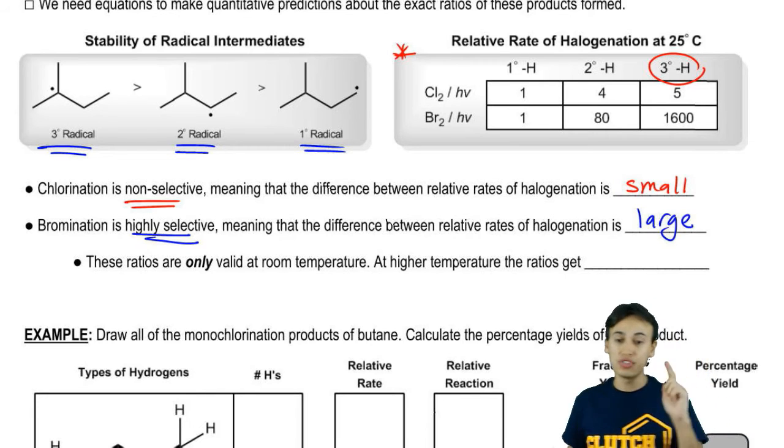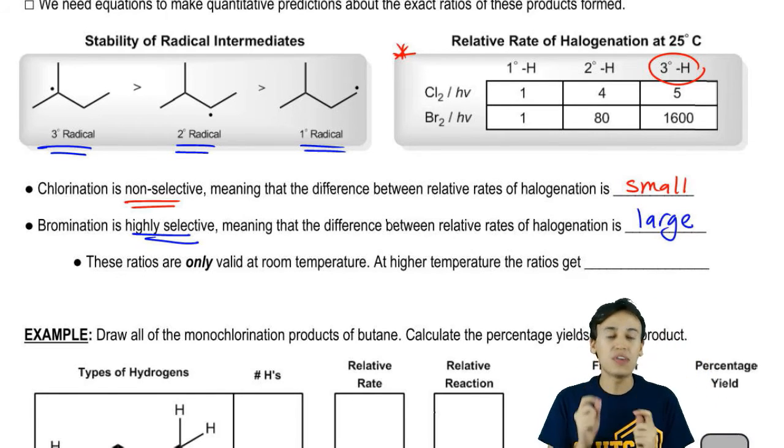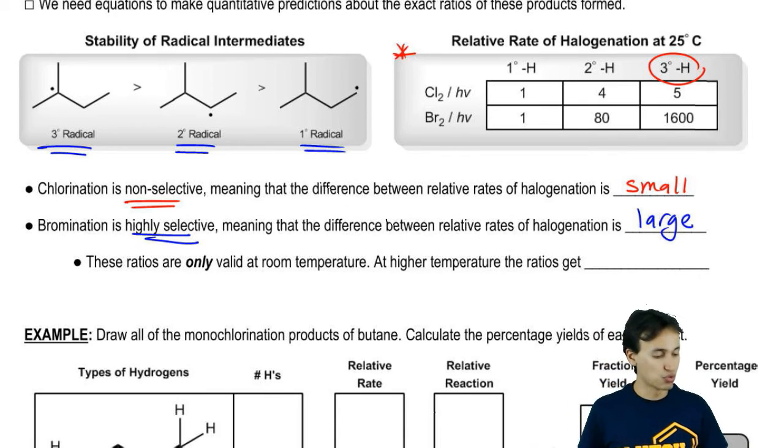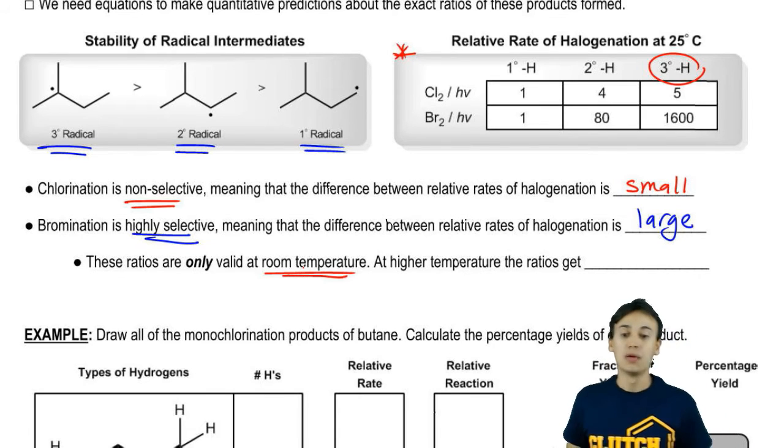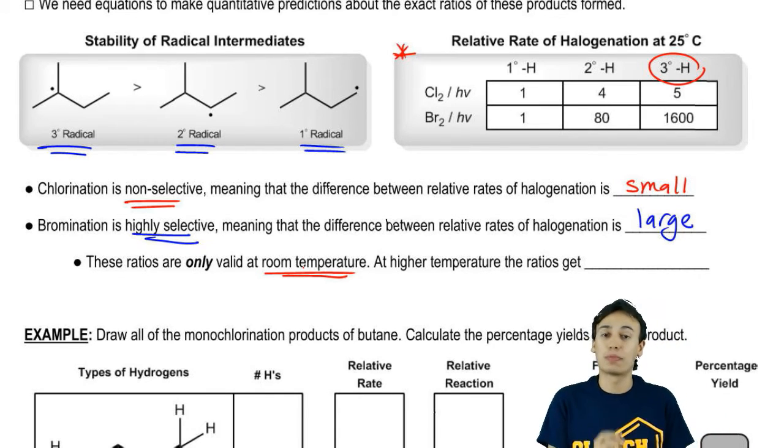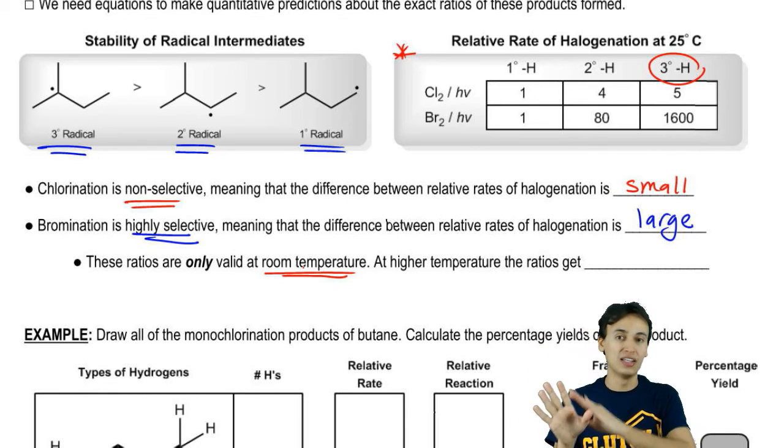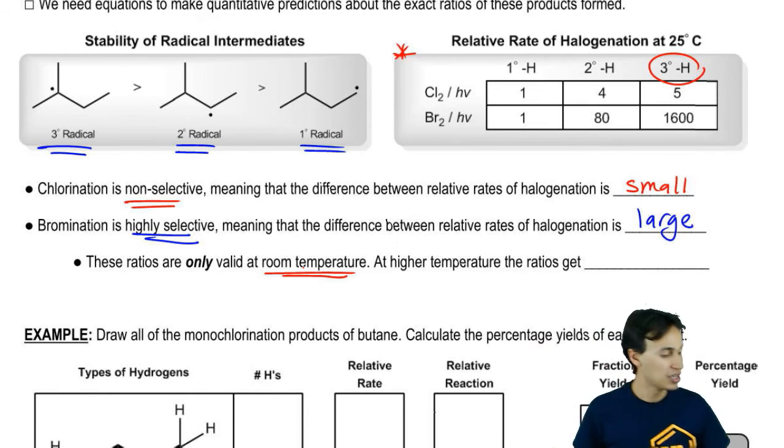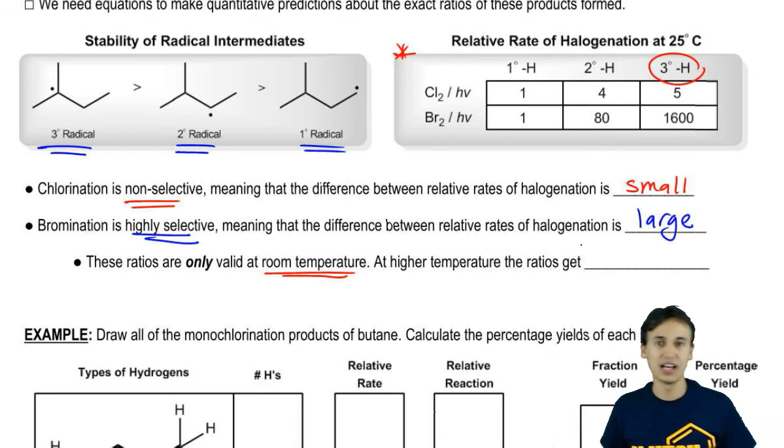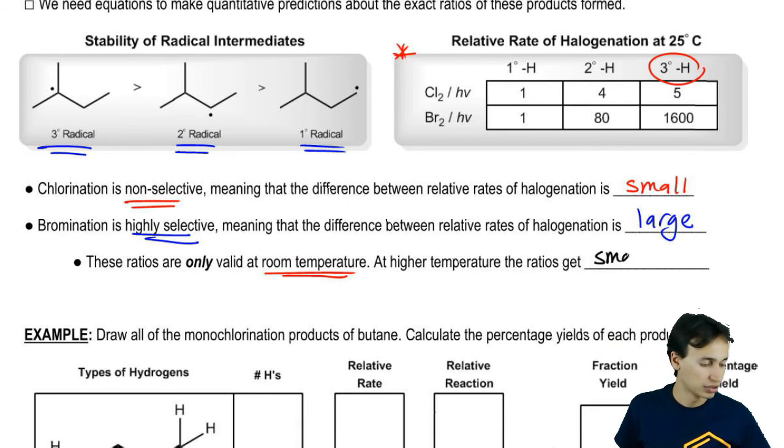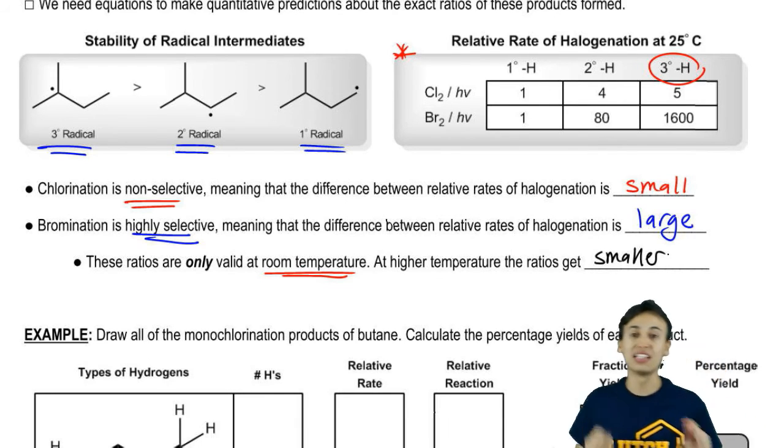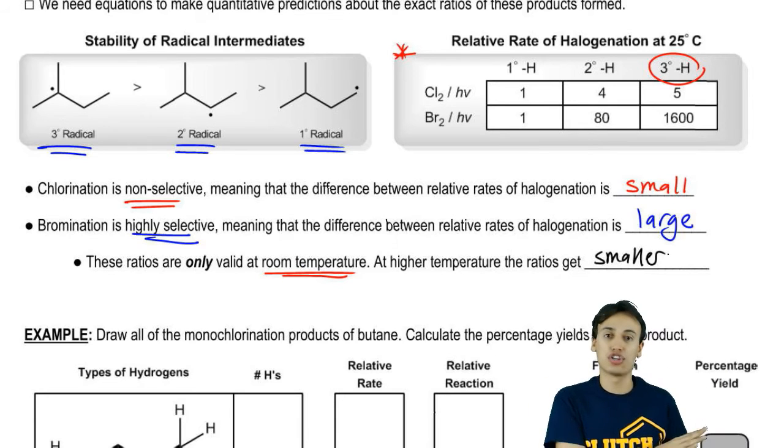These ratios that I'm giving you here are only valid at one temperature and that's room temperature because that's the temperature that these experiments were conducted under. If we jack up the temperature for this reaction, the ratios between the different types of selectivity become smaller, meaning that there's less difference between primary, secondary, tertiary. Why?